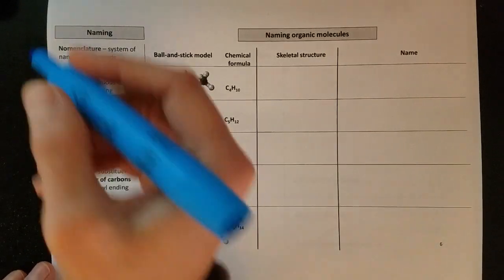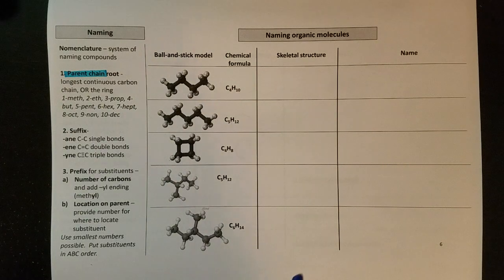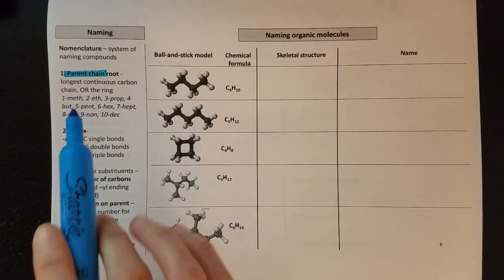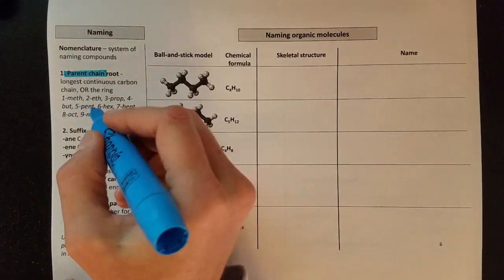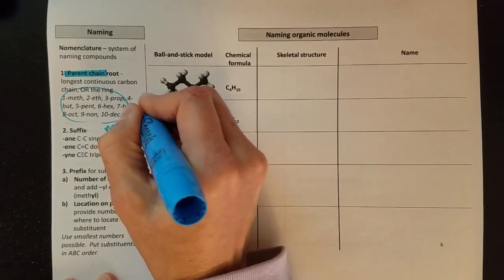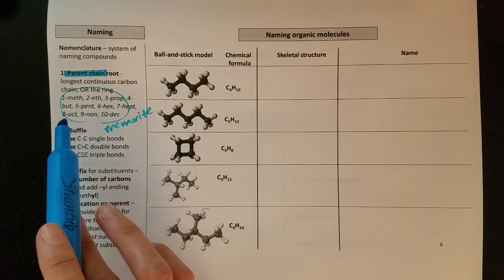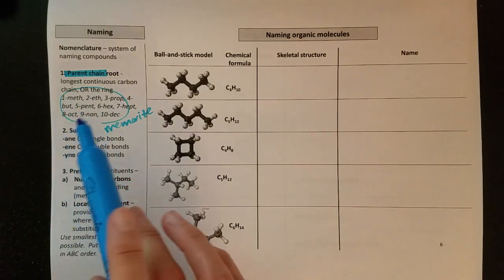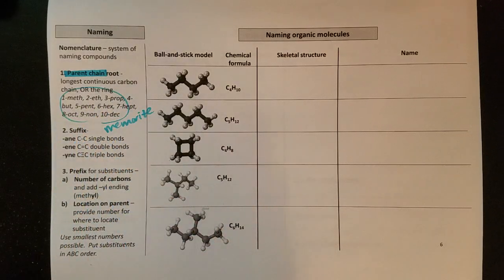A couple things we're going to look for when we go to name: we're going to look for the parent chain, which we've already been looking at when we drew structures. That's going to be the root of my name—the longest continuous carbon chain or the ring. These you need to memorize or have handy. One carbon we use the prefix or root meth, two we'll use eth, three prop, four bute, and then it continues from there.